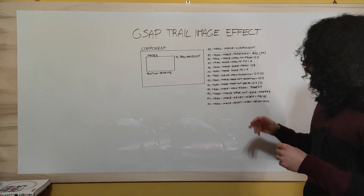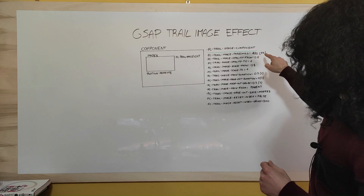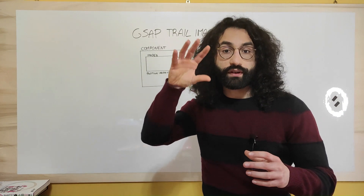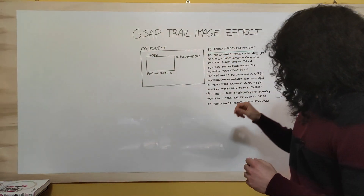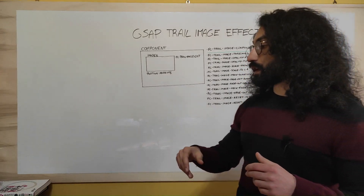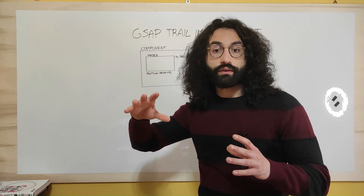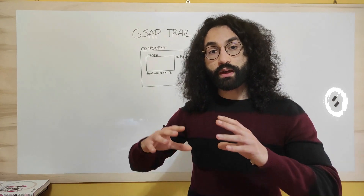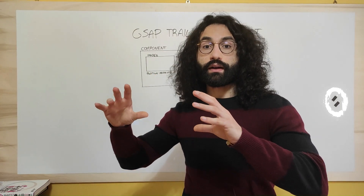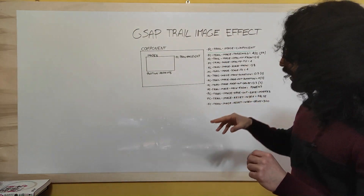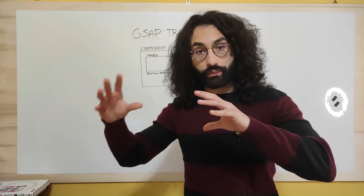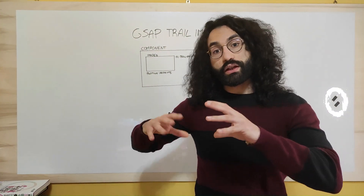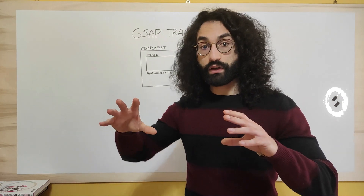We have an option for the threshold, whose value is in pixels — this is the minimum distance the mouse has to travel before the next image in the trail gets generated. Then we have opacityFrom, which is the initial opacity value for all images. Then opacityTo, which is the opacity each image will be animated to before it starts fading out. Then scaleFrom, the initial scale value for each image, and scaleTo, the scale each image will be animated to before it starts fading out.